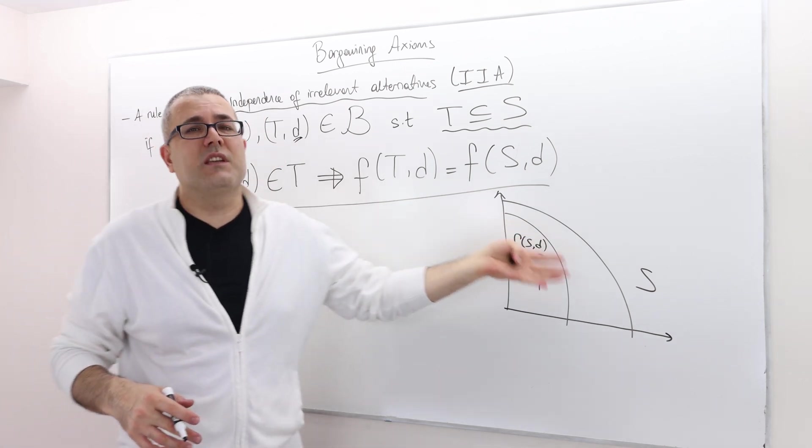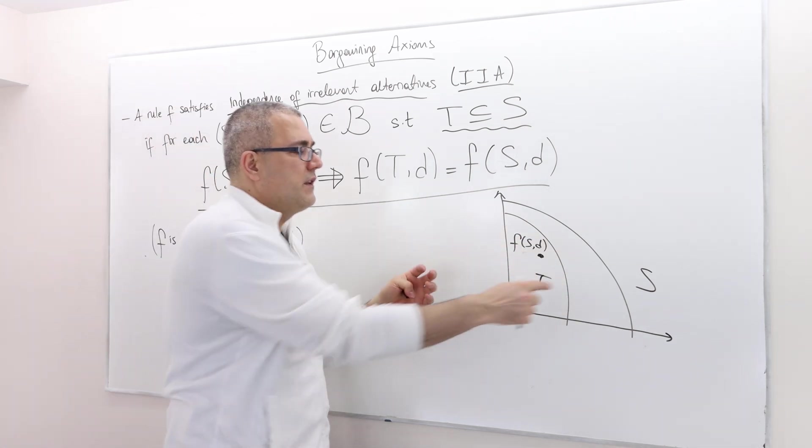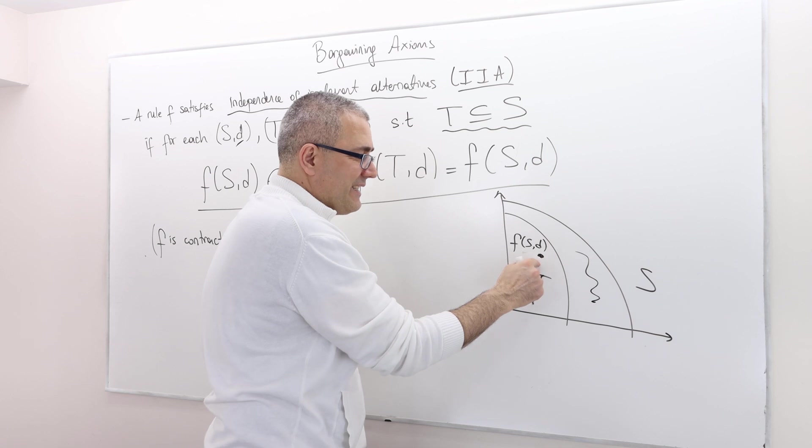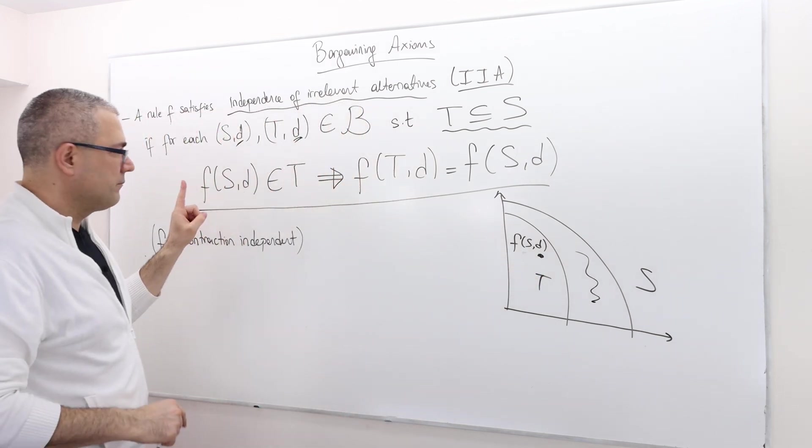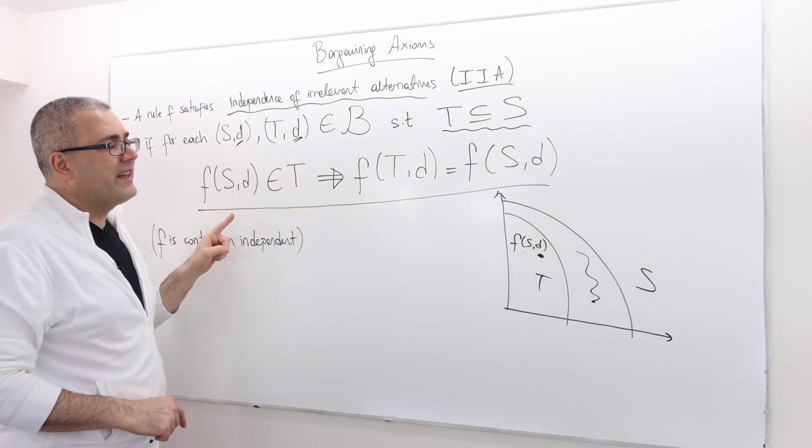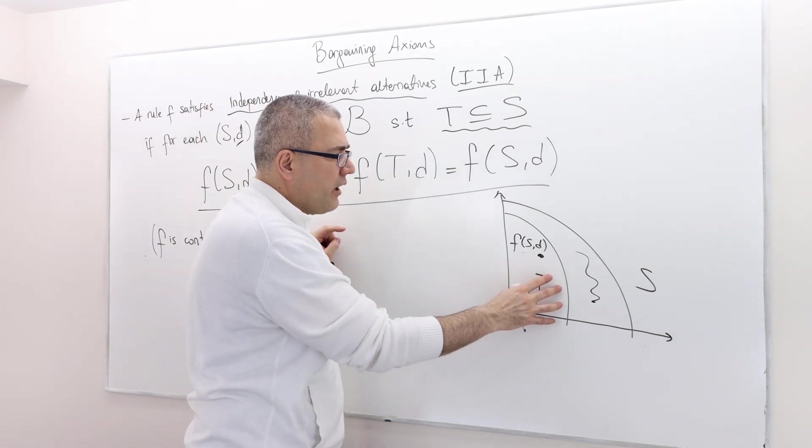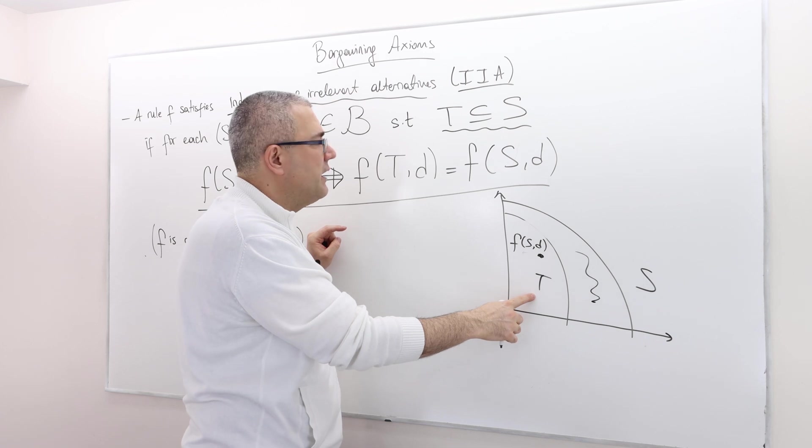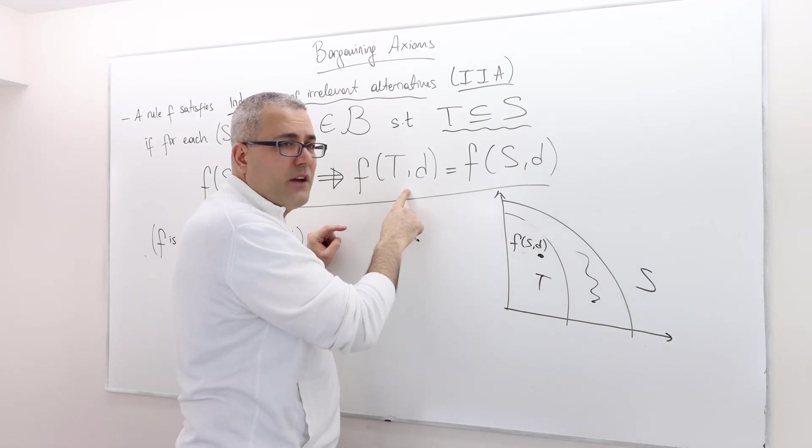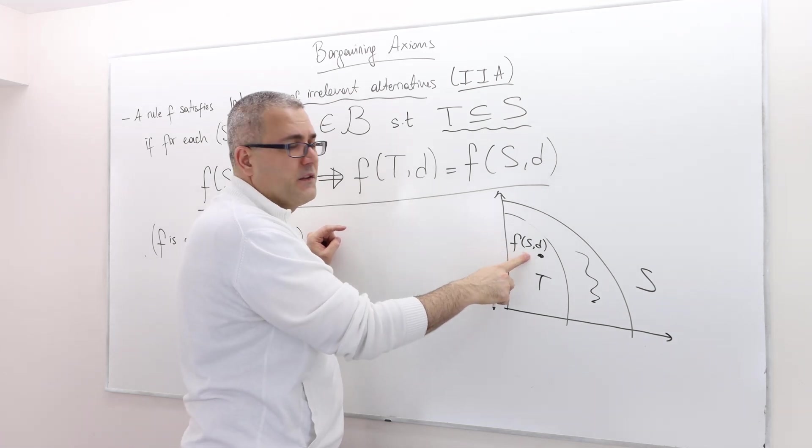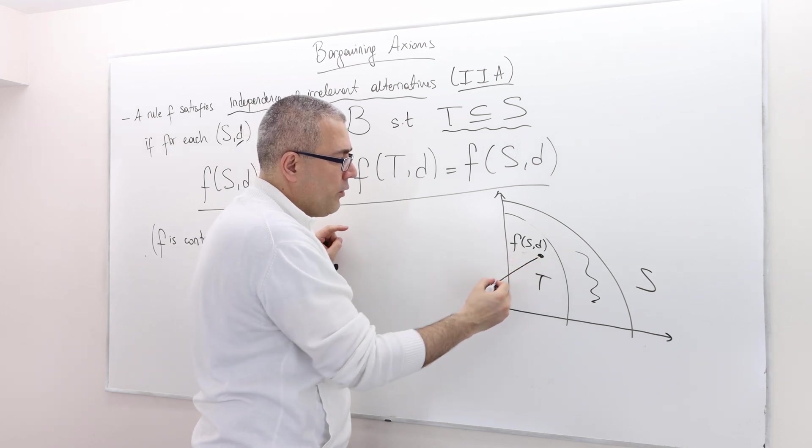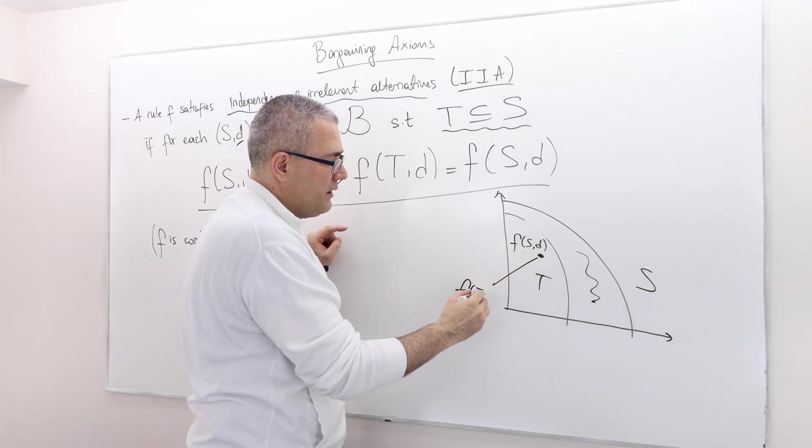It is also inside S, obviously, but it's not here. It's exactly in T. If this is the case, that means when I try to find the solution in my set T, it should actually be equal to this point. So this point should also be equal to F(T,d).